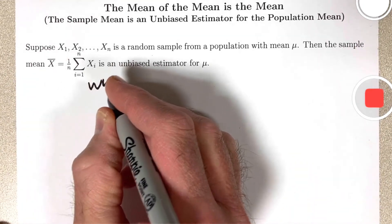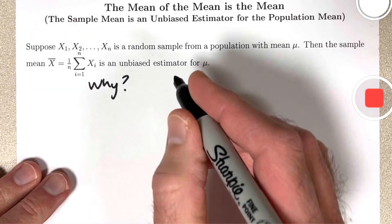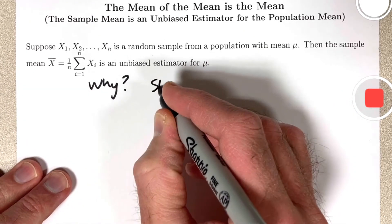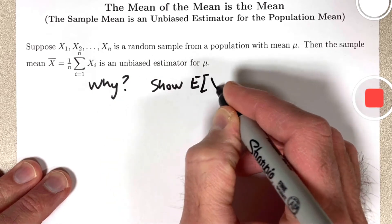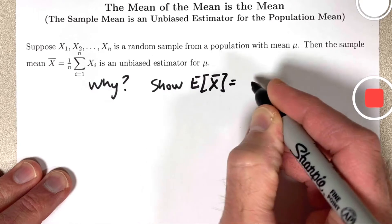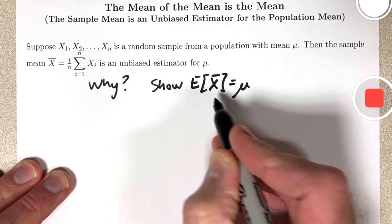Why? It can be summed up in the phrase, the mean of the mean is the mean. To be more precise, we must show that the expected value of x-bar equals the population mean mu.